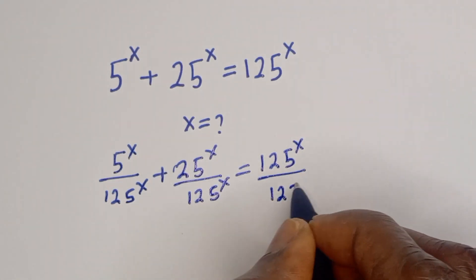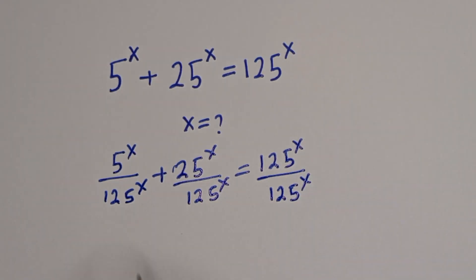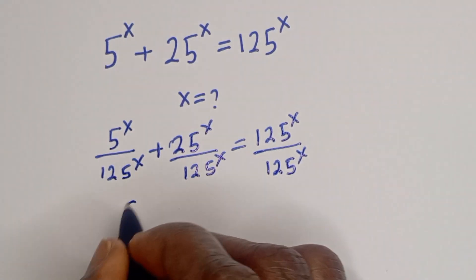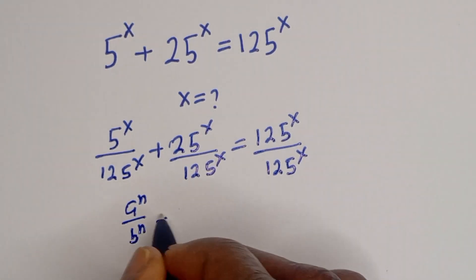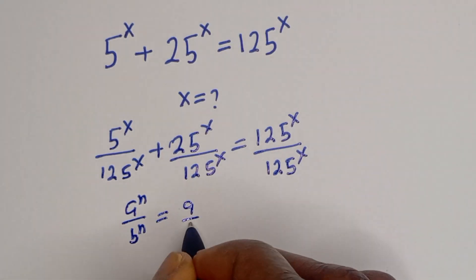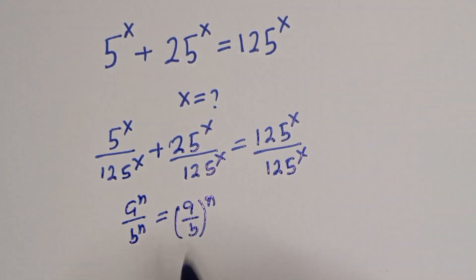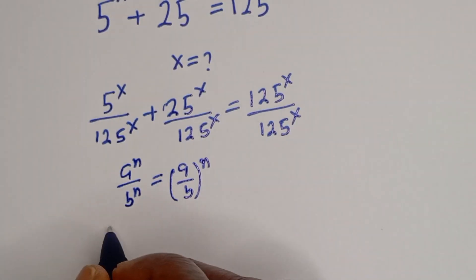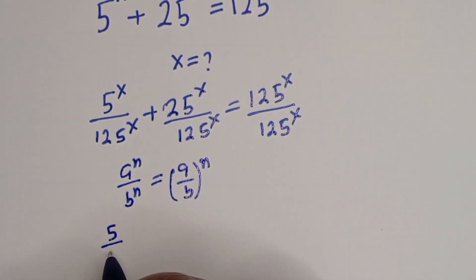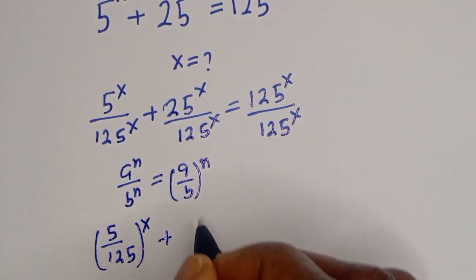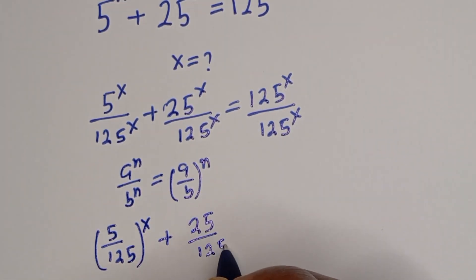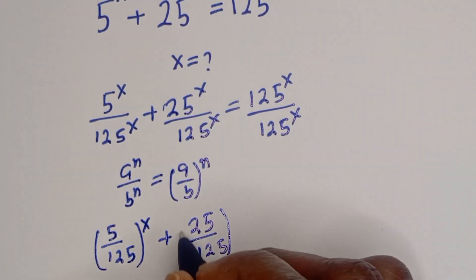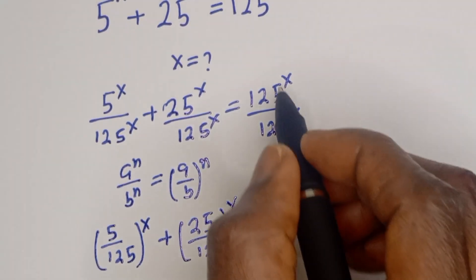Now, if you have a to the power of n over b to the power of n, this is equal to (a/b) to the power of n. Then this can be written as (5/125) to the power of x plus (25/125) to the power of x, which equals 1.